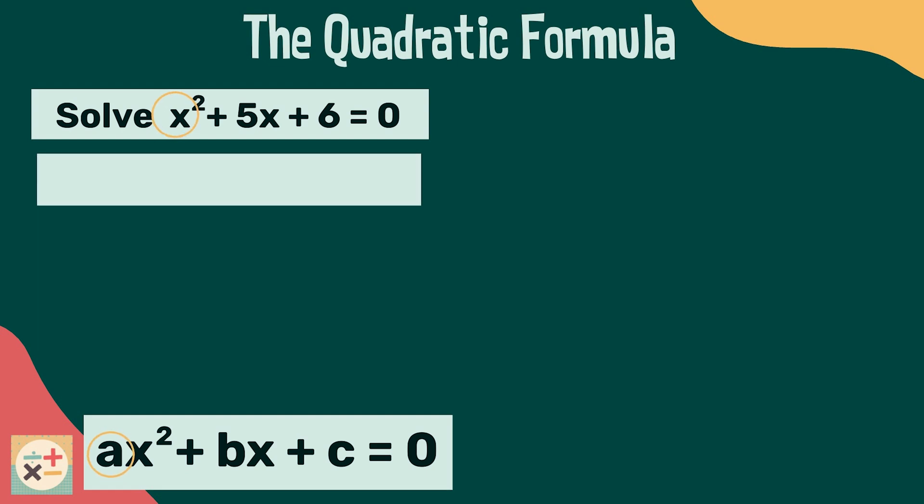Here, a equals 1, as there is no coefficient for x squared written in the equation. b equals 5, and c equals 6.